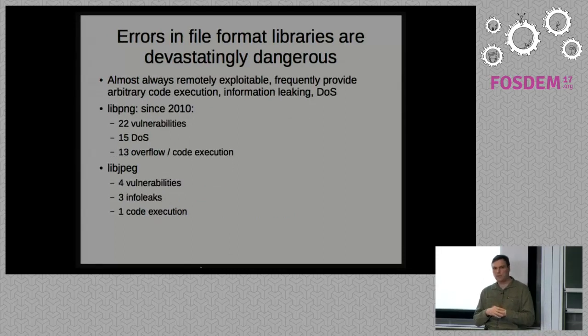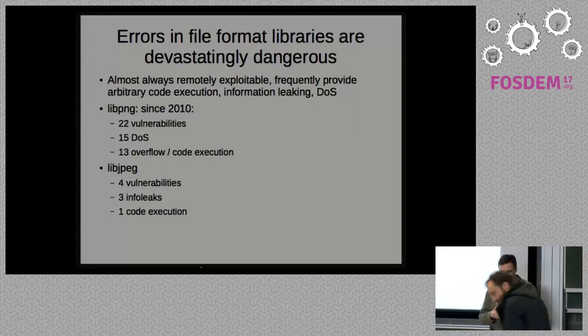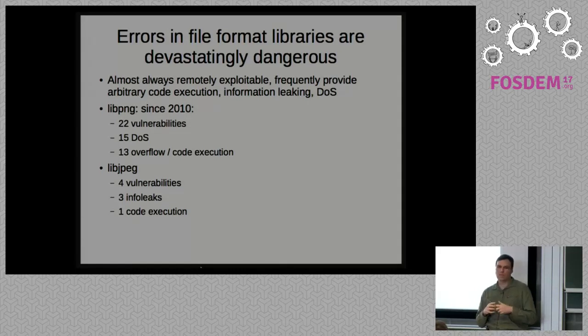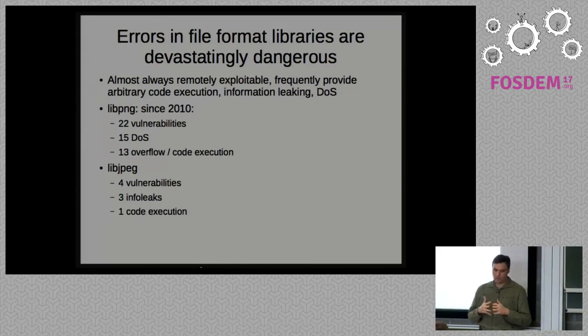Needless to say that errors in file format libraries can be really devastatingly dangerous. Almost every such an error, such as buffer overflow, such as reading beyond some part of structure, interpreting something wrongly because of human errors in writing the code, are almost always remotely exploitable. They frequently provide arbitrary code execution, especially if we are talking about buffer overflows in libraries written in languages such as C. They leak information. They usually can lead to denial of service errors. For example, in libpng since 2010, there were 22 vulnerabilities, and quite a few of them are really dangerous. In libjpeg, for example, there are four vulnerabilities, but they are still dangerous as well.